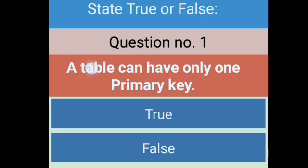Now True/False. First question: A table can have only one primary key. Can a table have more than one primary key? No, a table has only one primary key. This is true, right answer.